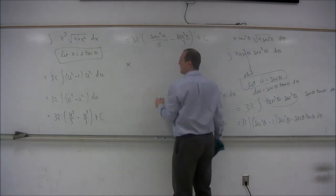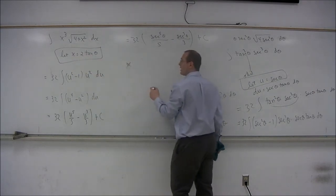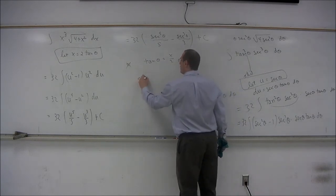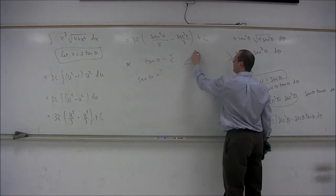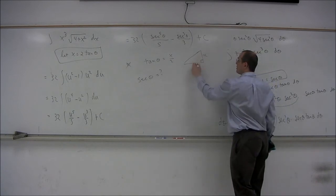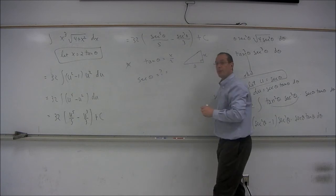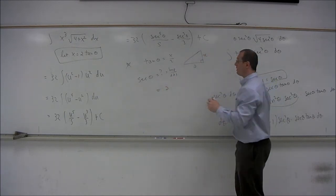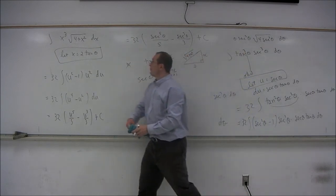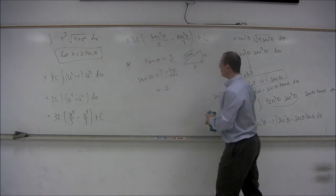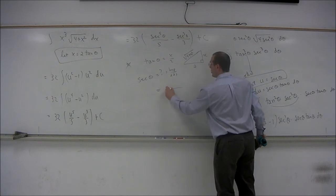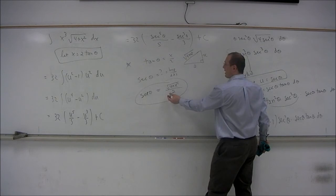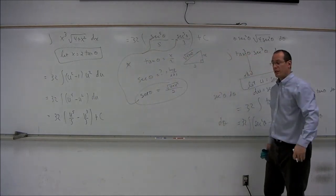Now this is where it gets tricky. The original substitution was x equals 2 tangent theta, so tangent of theta equals x over two. We need to find the secant of theta. The tangent of theta is x over two, which is the opposite over the adjacent. The secant is the hypotenuse over the adjacent. With adjacent equal to 2, the hypotenuse by the Pythagorean theorem is the square root of 4 plus x squared — not coincidentally, the same square root from the problem. So secant of theta equals the square root of 4 plus x squared over two, and we plug that in for secant of theta in both places to get our final answer.